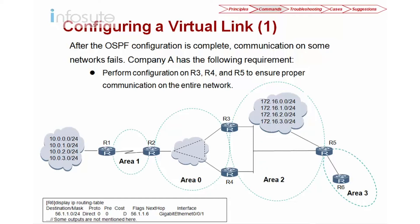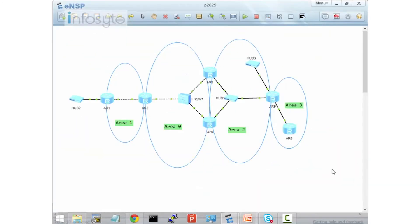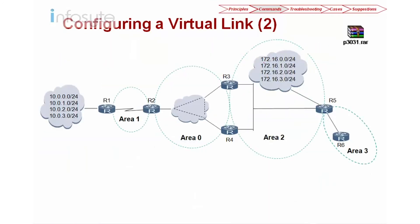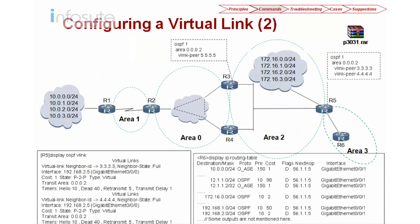Let me show you the configuration. Based on this configuration, we are going to configure on R3, R4, and also R5. You just go into the OSPF area 1, area 2, define where is your peer. Your peer is 5.5.5.5 for R3. R5 will peer back to 3.3.3.3 and 4.4.4.4. R4 still needs to peer with R5 as well.